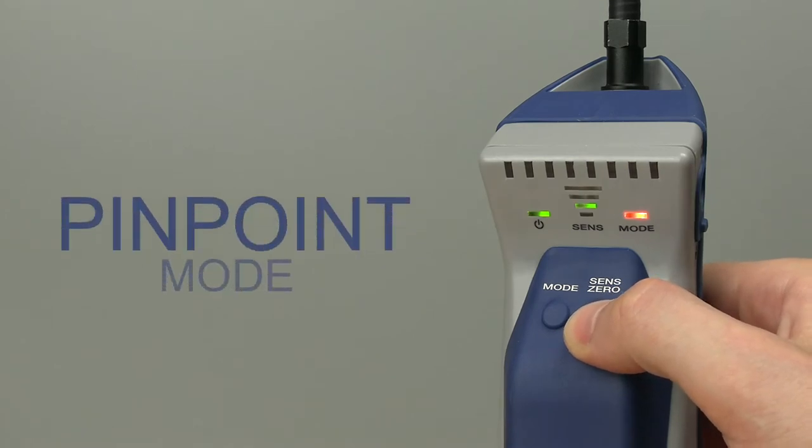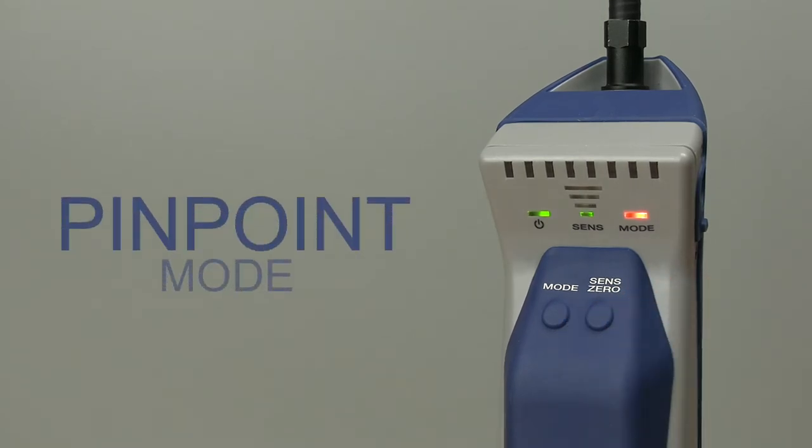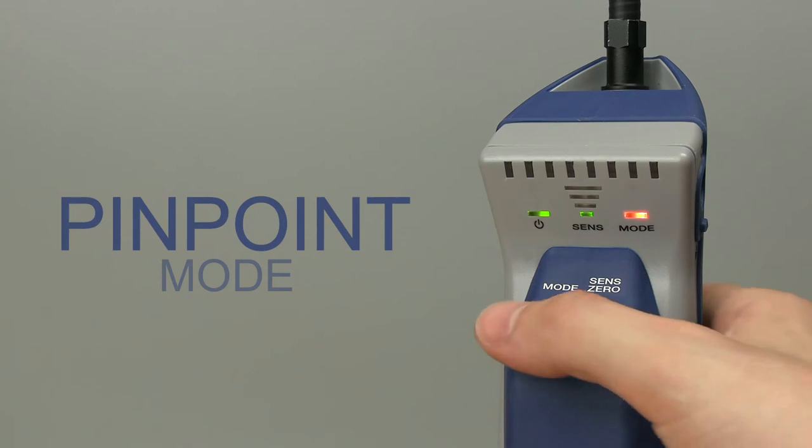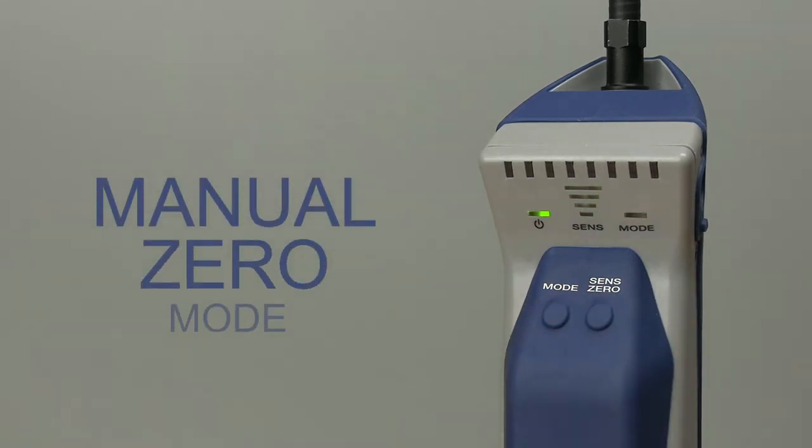DTEK3 has two operating modes, Pinpoint and Manual Zero. Press the mode button to toggle between modes. You'll know you're in Manual Zero mode when the mode indicator flashes steadily. DTEK3 always starts up in the last mode that was used.